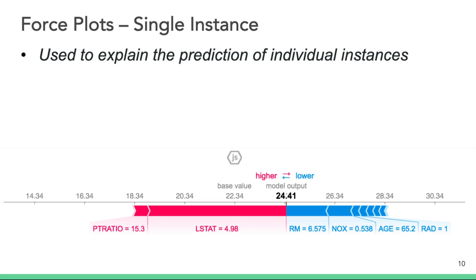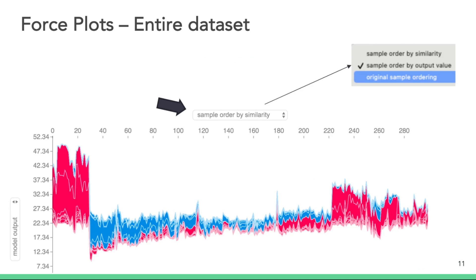SHAP offers a lot of charts to help us visualize explanations. This specific force plot, used to visualize a single instance, shows features pushing the prediction in one direction in blue, and features pushing the prediction in the opposite direction in red. The size of individual features represents the magnitude of feature importance. So LSAT is more important than PT ratio, and directionally LSAT is pushing the prediction opposite of RM and age. Another version of the force plot is more interactive and helps us visualize the entire dataset, with a dropdown option allowing us to choose variations on the plot.